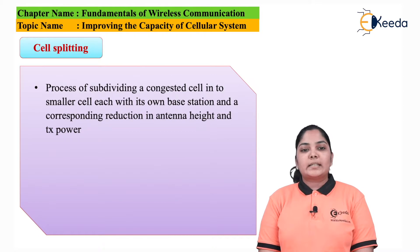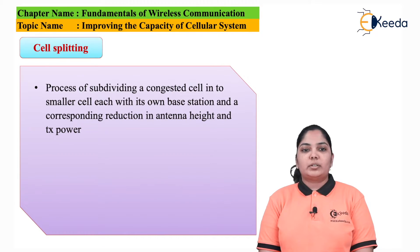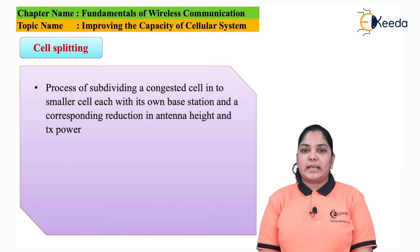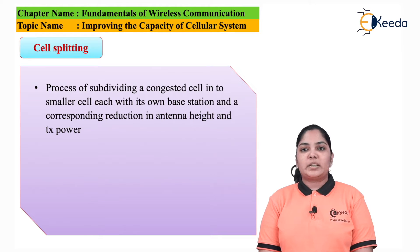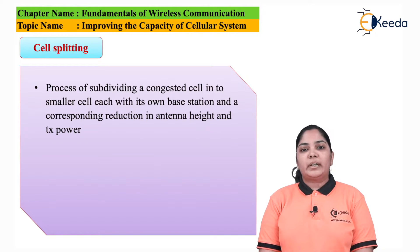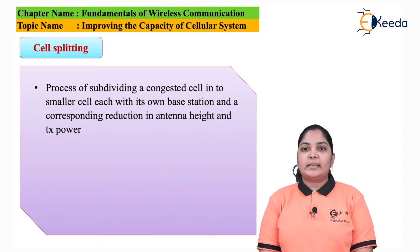Cell splitting is the process of subdividing a congested cell into smaller cells, each with its own base station and a corresponding reduction in antenna height and transmitter power. Since we want to reduce the size of the cell, we reduce the height of the base station and reduce the power. When we do this, the power radiation of the cell decreases, meaning the coverage of the cell decreases, and hence the size of the cell decreases.